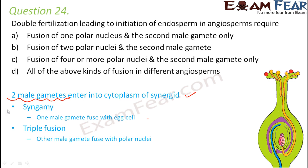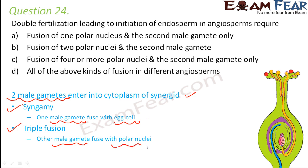There is one fertilization called syngamy, where one male gamete fuses with the egg cell — the egg cell is the female gamete and the pollen is the male gamete. The other male gamete fuses with the polar nuclei, and this is known as triple fusion. Why triple fusion? Because three nuclei are involved: one male gamete and two polar nuclei. So syngamy and triple fusion are both fertilizations, and that is why it is called double fertilization.